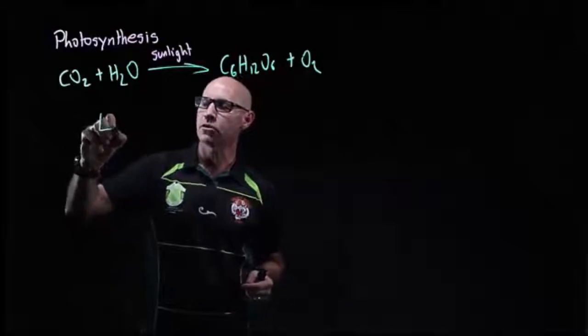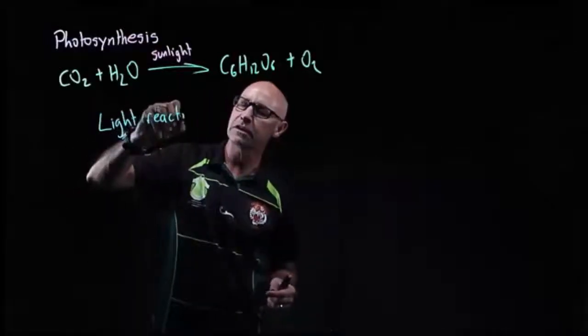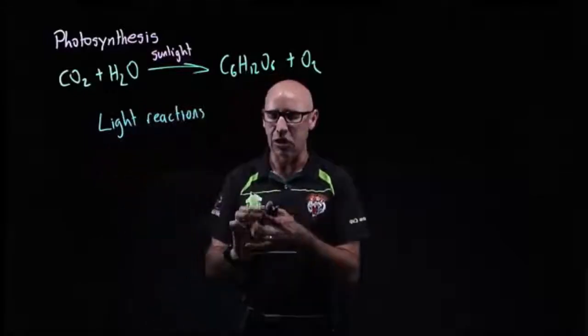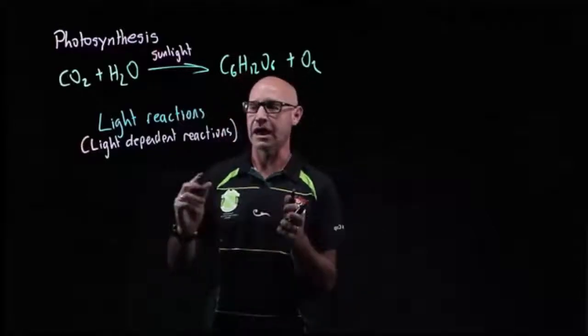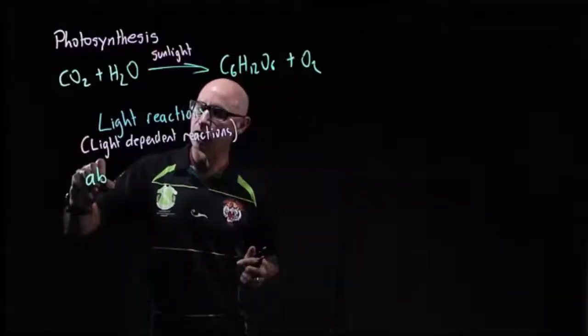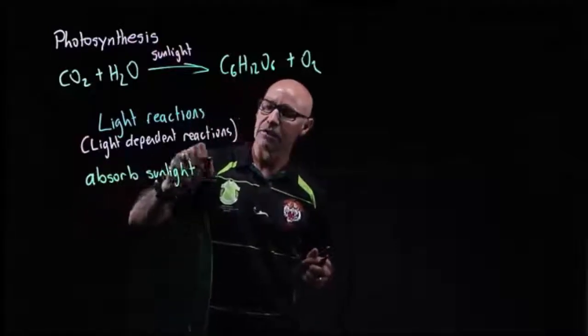First of all, we've got what we call our light reactions, or more specifically, we should call them our light-dependent reactions. The process of our light-dependent reactions is that they absorb sunlight, and they do that obviously through our pigment.